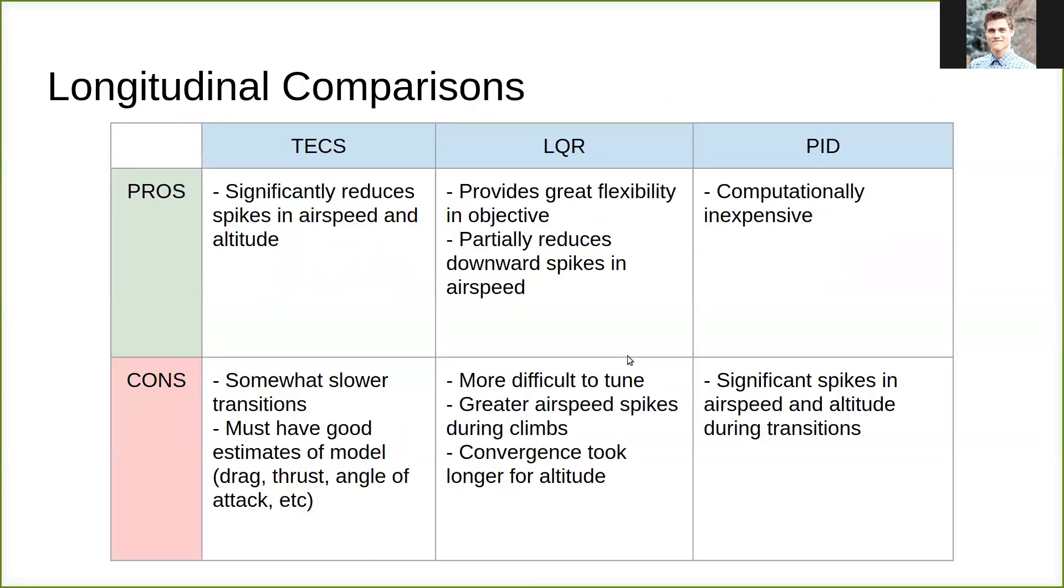So, in conclusion, our comparisons for our longitudinal control, we can see that TECS has the pro of significantly reducing spikes in airspeed and altitude, which is great. That was our intention. The cons is it's somewhat slower transition sometimes between states, and you have to have good estimates of your model, your drag, thrust, angle of attack, etc.